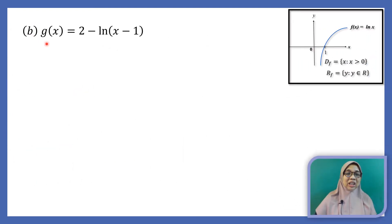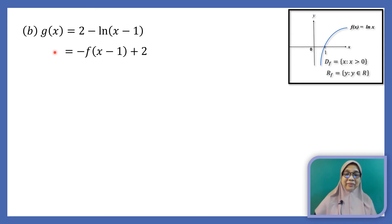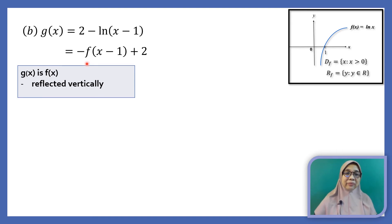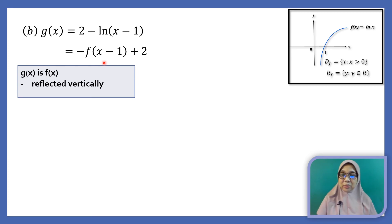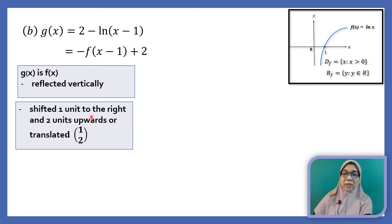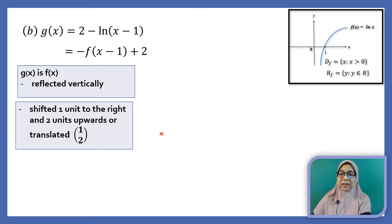Let's graph the function g(x) equals 2 minus ln(x minus 1). How is g(x) related to f(x)? We can rewrite g(x) as negative f(x minus 1) plus 2. The negative in front of f indicates we need to reflect the graph vertically. Since x minus 1 is grouped together, we equate x minus 1 to 0, giving x equals 1, which means we shift the graph 1 unit to the right. Plus 2 indicates we shift the graph 2 units upwards, or translate by (1, 2).